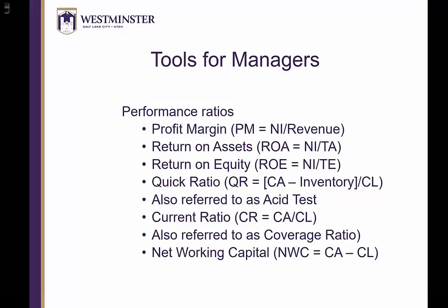The performance ratios we're most concerned about begin with profit margin, which is the net income of a company divided by its revenue. It gives us an idea of how much of our revenue is turning into profit. We then get to see the return on assets. Managers are entrusted with a firm's assets, which might be hard assets like property, plant, and equipment, or intellectual assets such as technology, innovation, and patents.